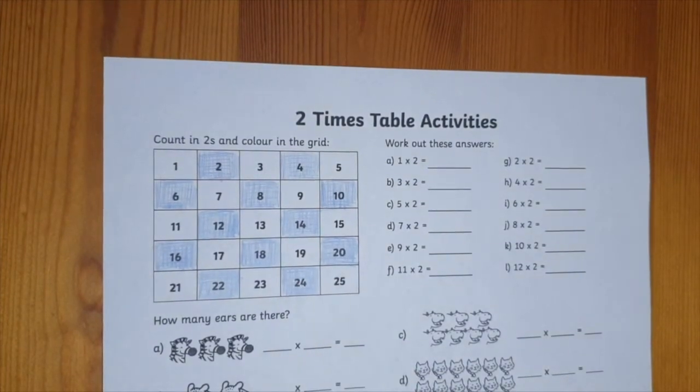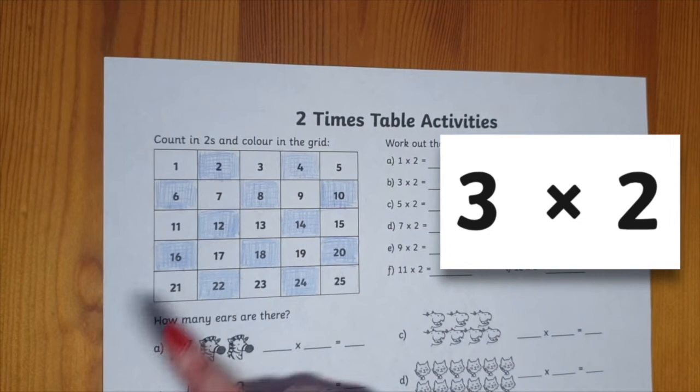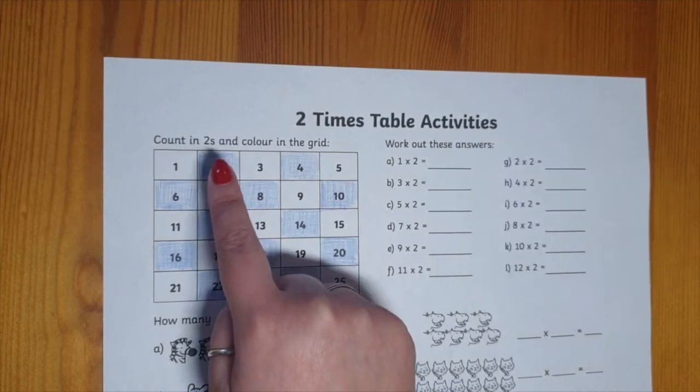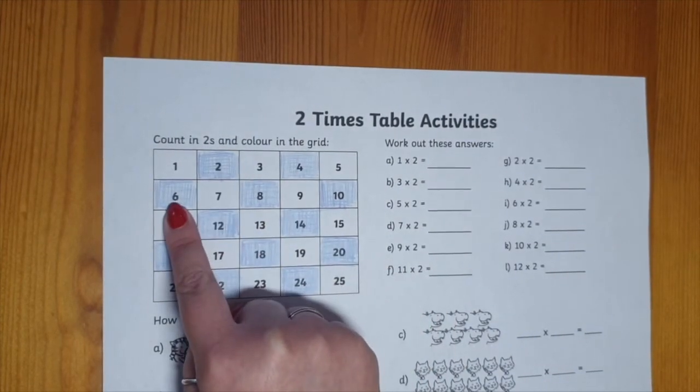For example, if you say to your child, three times two, they'll count along to find the third one coloured in. One, two, three. Three times two is six.